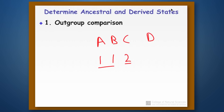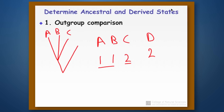We pick D, for example, and then we say, what character state does D have? Maybe D has character state two. That would mean it's most likely that two is the ancestral form. If we were to draw this from an evolutionary point of view, say we have initially A, B, and C — we don't know what their relationships are, but we know that D is outside of them. So if D has character state two, then most likely at the root of A, B, and C, the ancestral version is two, and the derived state is going to be one. That's how we use outgroup comparison to figure out what the relationship is of different things.